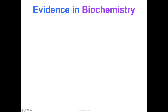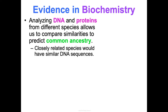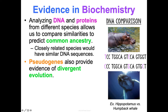This is my favorite because it's the most straightforward evidence — biochemistry. In biochemistry, we look at DNA and proteins from different species and compare them. Closely related species have very similar DNA sequences. For example, look at this gene on a hippopotamus and a humpback whale — many of the letters are similar, with just a couple of differences. If you compared that same gene on a hippo versus bacteria, they would be really, really different. The more you have in common on your DNA, the more closely related you are.